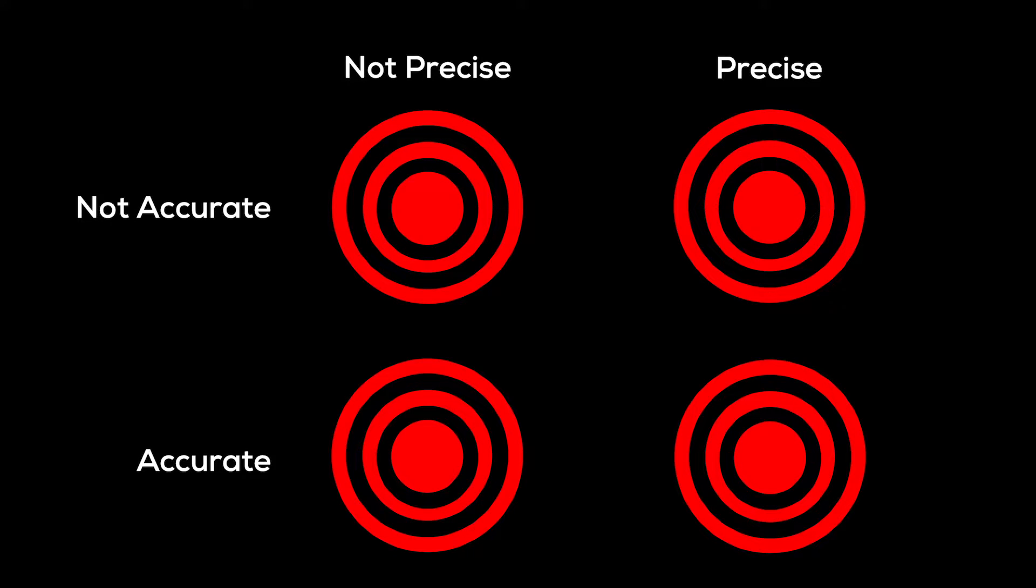A dartboard is the easiest way to explain the difference. This pattern of shots is not particularly accurate, since the center of the grouping lies away from the center of the target, and not particularly precise, since the shots cover almost the entire dartboard. The next pattern is much more accurate, since it's fairly well centered on the target, but the shots are still widely scattered.